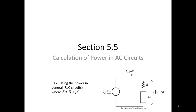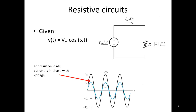Let's assume that we're trying to determine the power in a general RLC circuit. Let's take a look first at a resistive circuit. We know that if we're given a sinusoidal voltage source, and assuming that it has a phase shift of zero, we can determine the current through just that resistor as V over R. That gives us a current with an angle of zero as well. For resistive circuits, the current is in phase with the voltage, as shown.